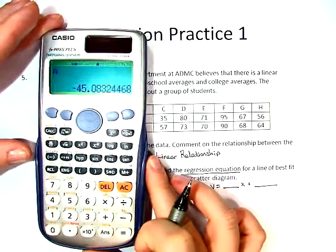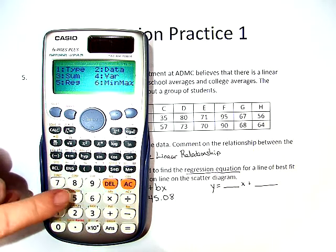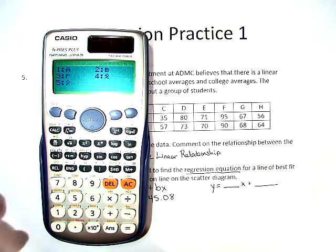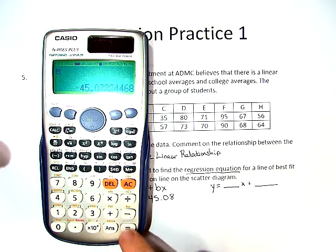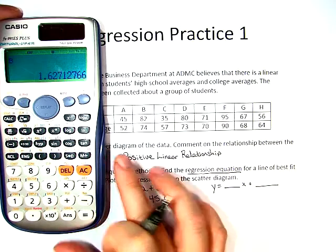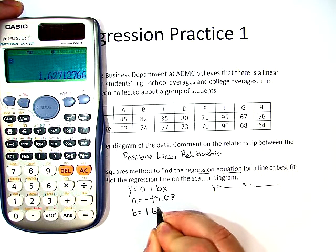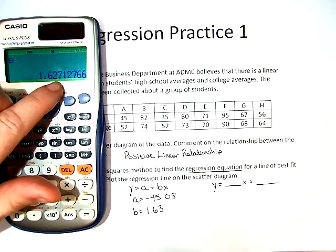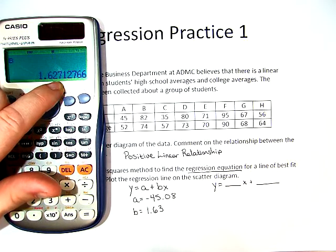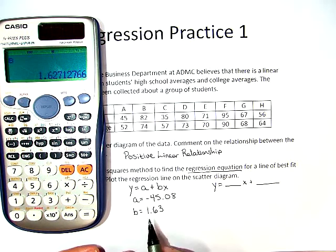Now we do the exact same steps for B. Shift 1, go into our number 5 regression, and do B. And we get 1.63. Now I know it says 1.627. However, when we see a number after the hundredths place that is bigger, greater than, or bigger than 5, we need to round up the next one. So we have 1.63.